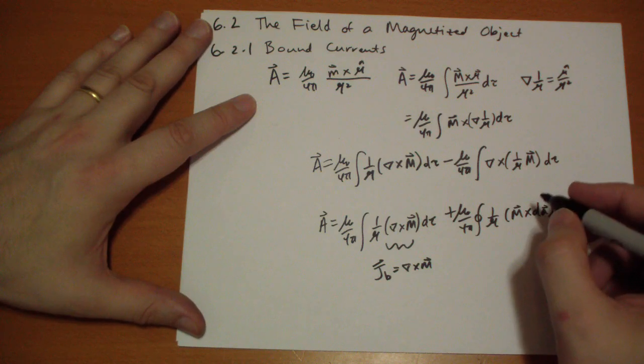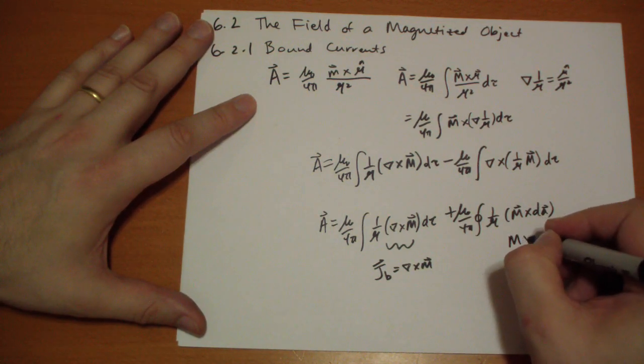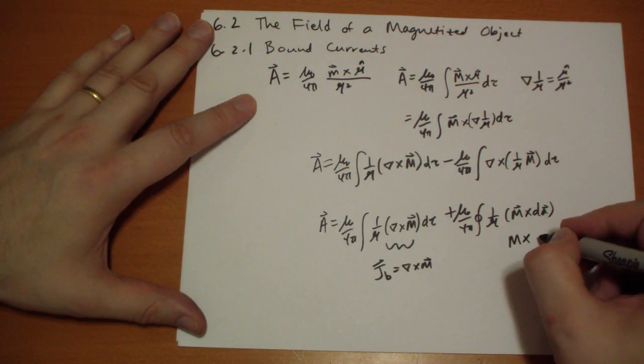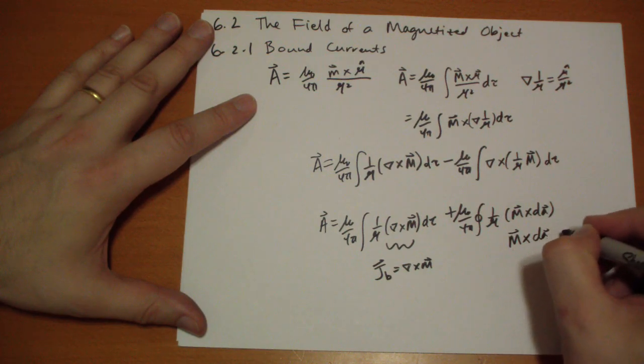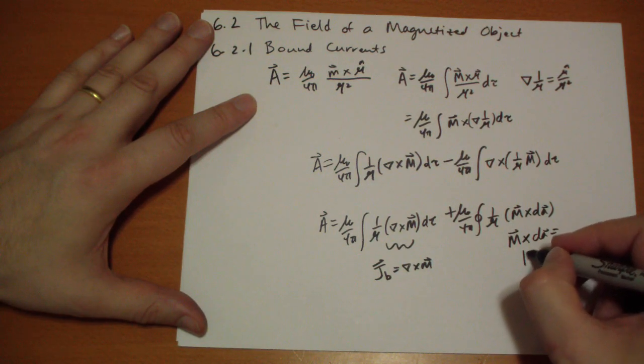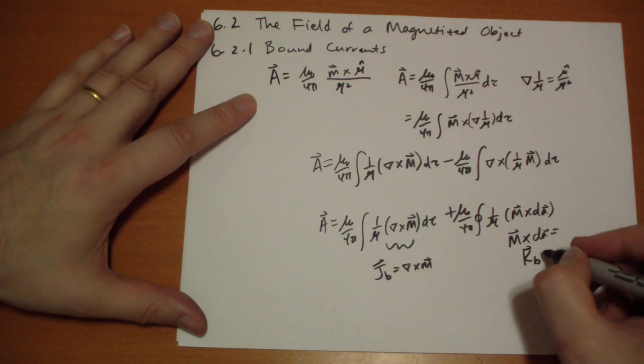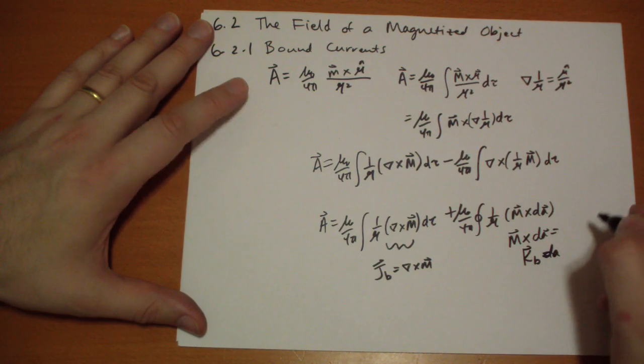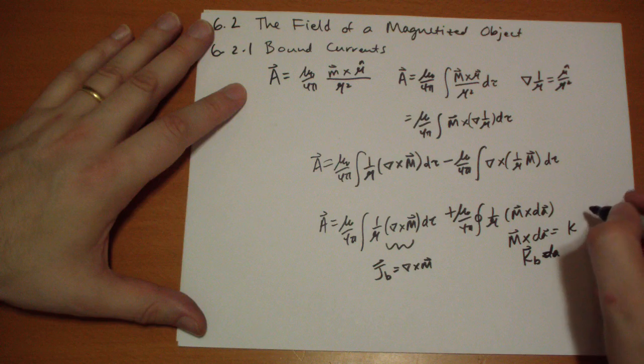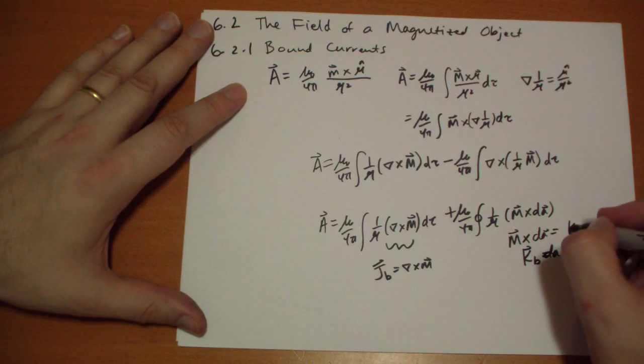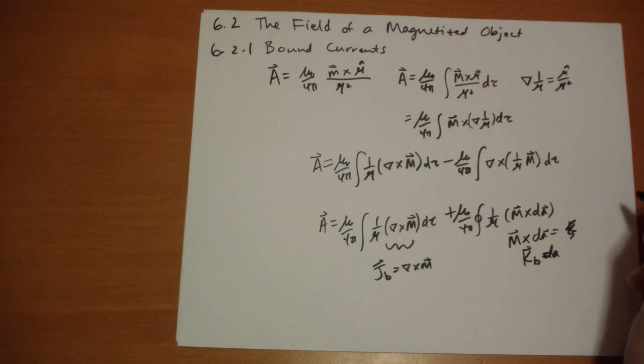So, over here we have, m cross d-a, gives us the surface, the bound surface current, d-a, times the area. Because this is equal to m cross n. Ah! m cross n times the area. Okay. The normal is the n.